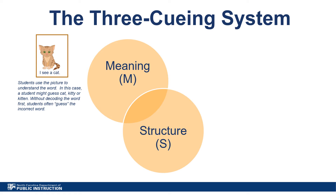Structure cues, also called syntactic clues, can be seen in instruction when students are asked to guess the unknown word in text based on the other words or phrases in the sentence. This can look like asking students to skip the unknown word, re-read the sentence, or read the rest of the sentence and then come back to the unknown word to see if they can guess it based on the other words or structure of the sentence.